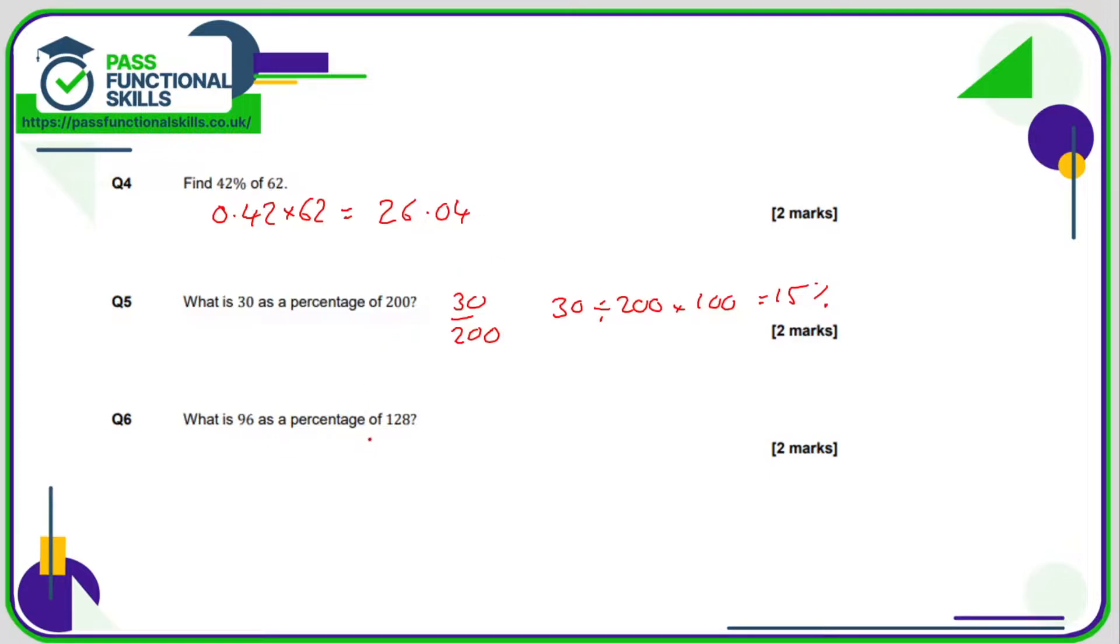Question number six, 96 as a percentage of 128. Well, that's 96 out of 128 as a fraction. So as a percentage, that's 96 divided by 128 multiplied by 100, and that comes to 75%.